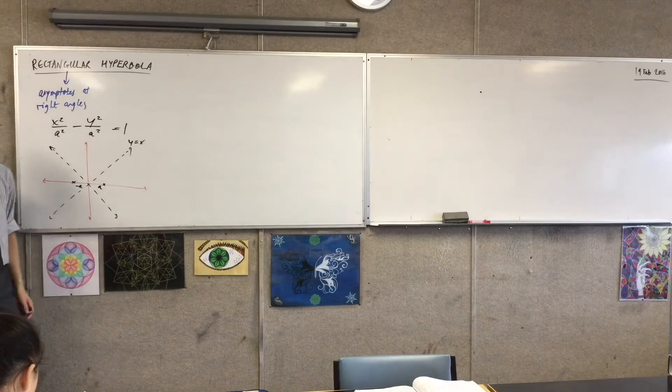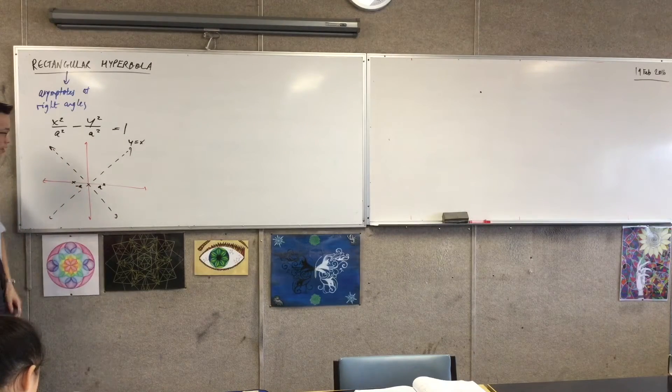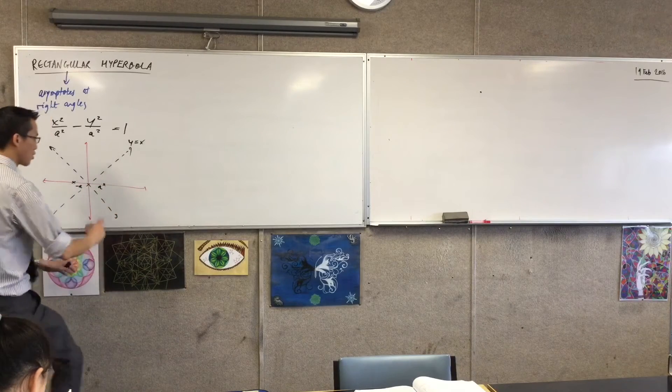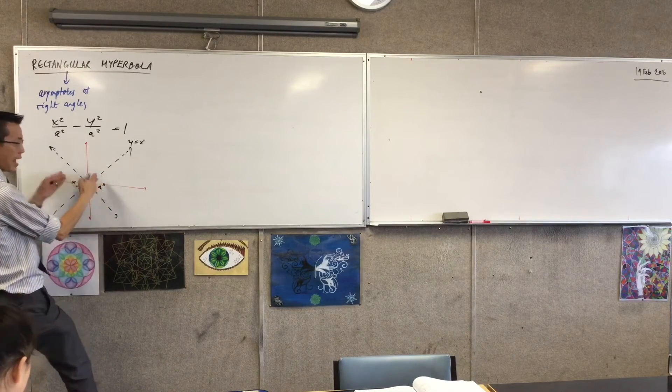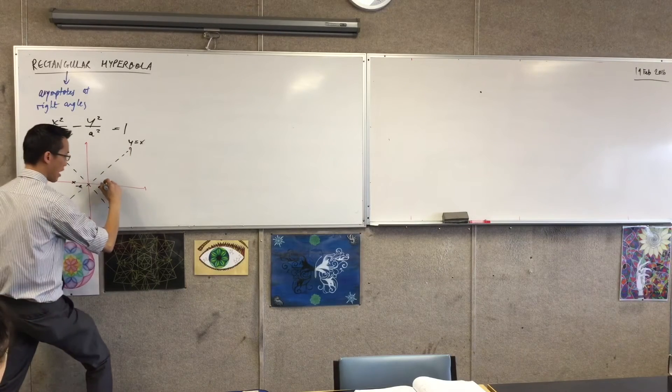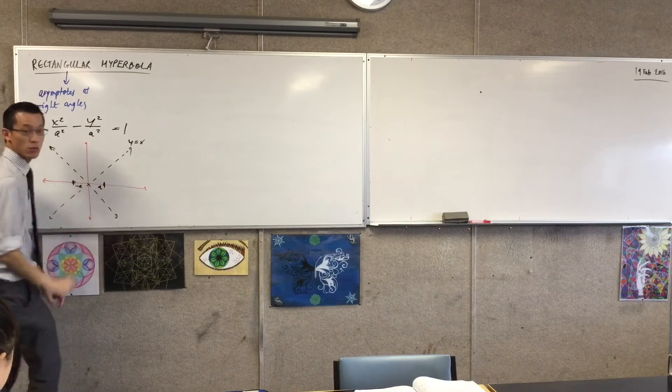In theory now, even though I should put on my directrix and also my focus as well, in theory now I have enough to draw the shape, at least accurately. So the way I tend to do it is remembering that at these two vertices it turns around horizontally. So I draw a vertical line there because you get a vertical tangent at those points, and then I approach that asymptote.